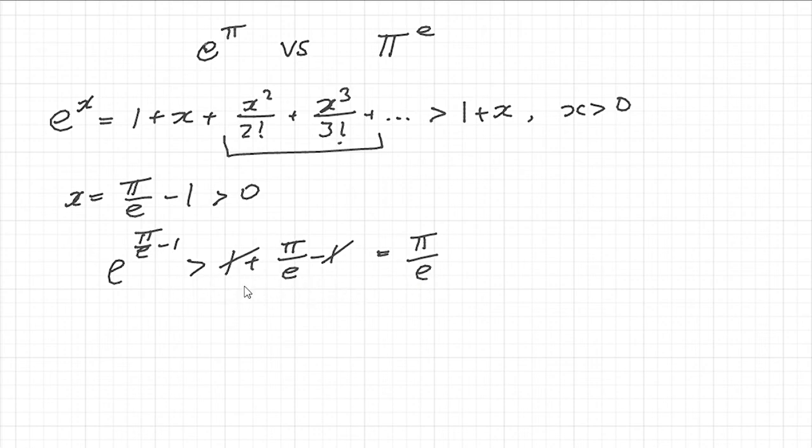Now all I'm going to do is just some basic algebra. Firstly, I'm going to multiply both sides by e. So I get e to the pi over e minus 1 times e, which is the same as times e to the power of 1, is going to be strictly bigger than pi over e times e, which is just pi.